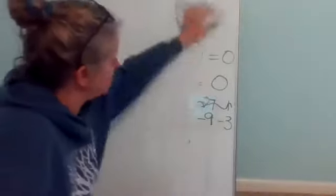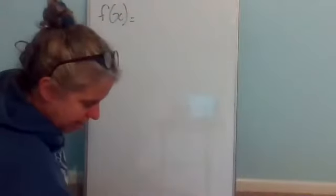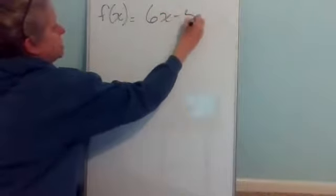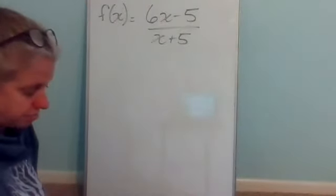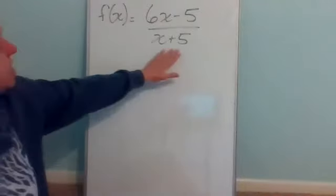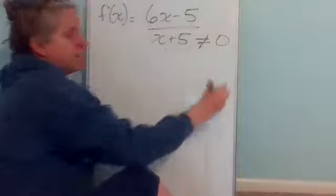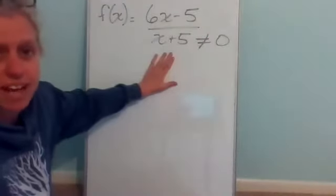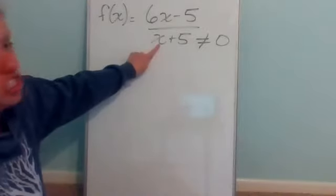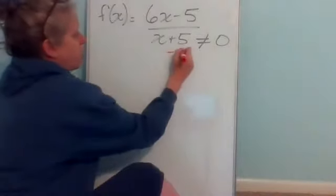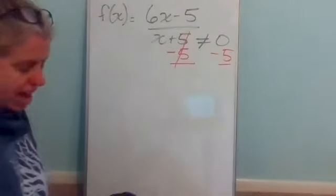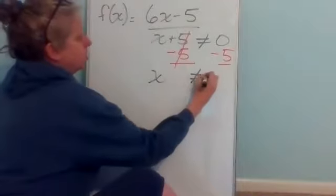When we get to number three, it's going to ask for the domain. The function is F of X equals six X minus five over X plus five. When finding the domain, my denominator cannot equal zero. Since it's just an X, not an X squared, I don't need to go to quad. I just get X by itself by subtracting the five, so X cannot equal negative five.